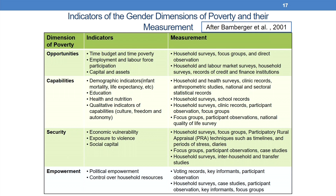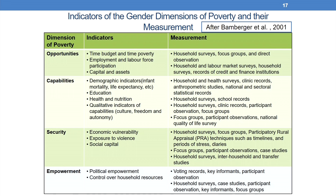For the security dimension, indicators include economic vulnerability — measured through household surveys, focus groups, PRAs such as timelines and periods of stress, and diaries. For example, in Assam, because of the National Register for Citizens, organizations have carried out vulnerability analyses through door-to-door surveys examining periods of stress from not being counted in the NRC. Exposure to violence can be studied through focus groups, participant observations, and case studies. Empowerment indicators — including political empowerment and control over household resources — can be studied through household surveys, key informant interviews, participant observation, and focus groups.